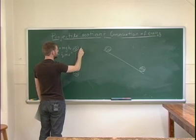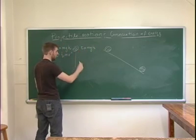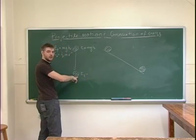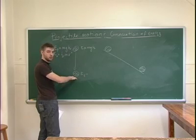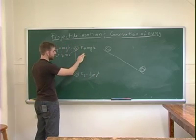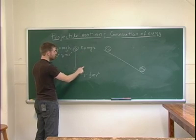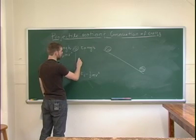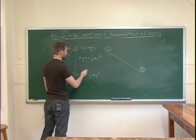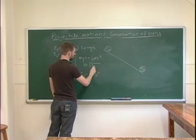Initially the ball has energy mgh — it's not moving and is lifted to height h. The final energy EF has no potential energy since it's on the floor, but it's moving, so it has kinetic energy ½mv². Since total energy is conserved, initial equals final energy: mgh = ½mv². Simple algebra — canceling the m's — gives the speed of the ball at the bottom: v = √(2gh).